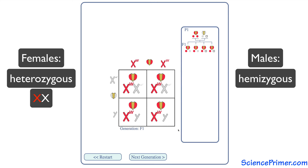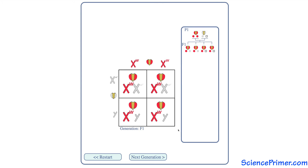Male offspring only have one X chromosome, which they receive from their female parent. In this reciprocal cross, that allele encodes for red eyes. So females are red-eyed because the presence of the red-eyed recessive copy is masked, and males are red-eyed because they only have one copy of the gene and that copy is the red allele. The females' phenotype and genotype are consistent with the pattern discovered by Mendel, but the males, as hemizygotes, are not.